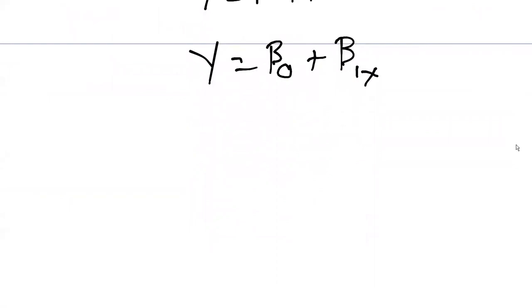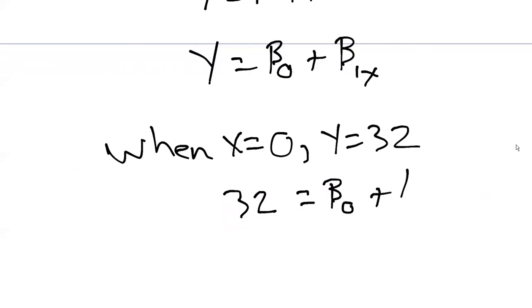What then we can say is, what about when we plug in values? We can say when x is 0, y is 32. We can plug those values into our formula. Then 32 is going to equal beta 0 plus beta 1 times 0. When x is 0, y is 32. Then we can say that simply beta 0 equals 32. We've got one value here that can describe our line.